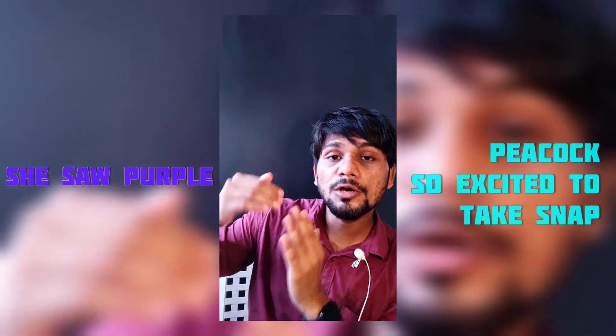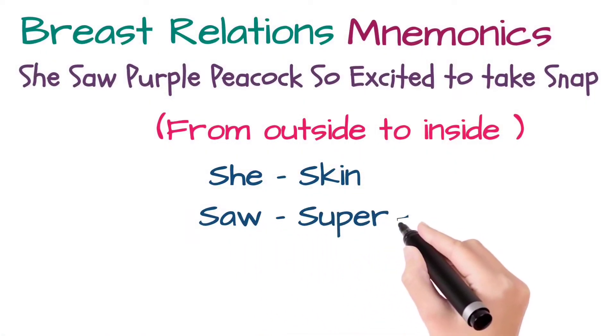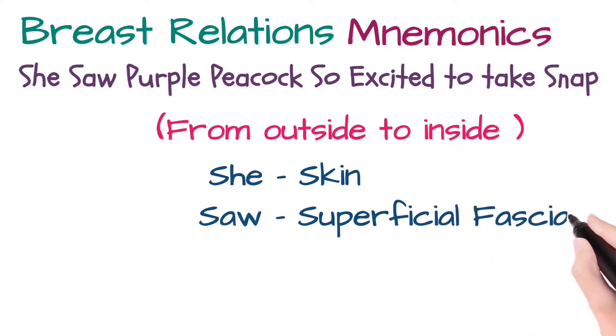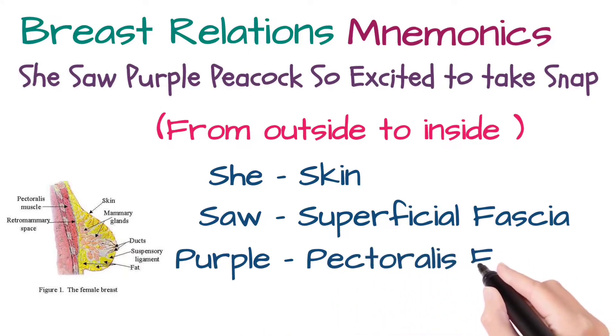We will separate this complete sentence into two parts: 'She saw purple' and then 'peacock so excited to take snap.' Going from anterior to posterior — 'She' stands for the skin, 'Saw' stands for the superficial fascia, and 'Purple' stands for the pectoralis fascia, which is present over the pectoralis muscle.